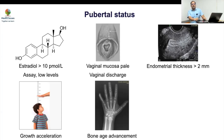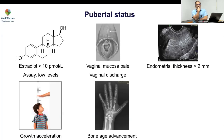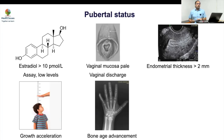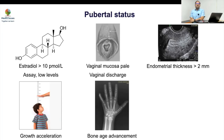Bone age minus height age is better, but proportionality matters. A gap of 2 years from age 3 to 5 (66% advance) is far more significant than from 10 to 12 (20% advance). Therefore, the percentage by which bone age exceeds height age is a better parameter. The best parameter is height SDS for bone age, which can be calculated via dedicated applications and accounts for parental height.